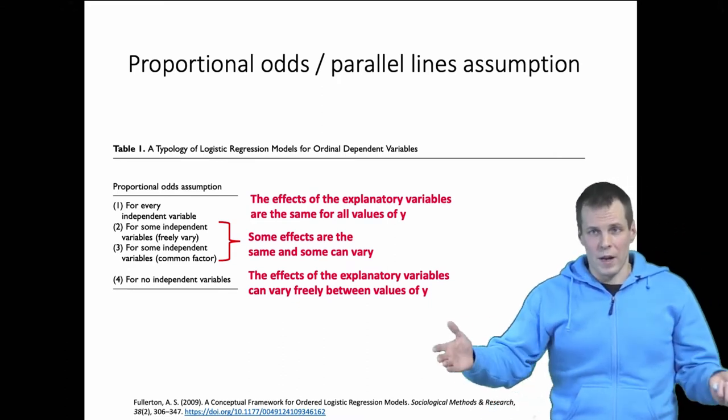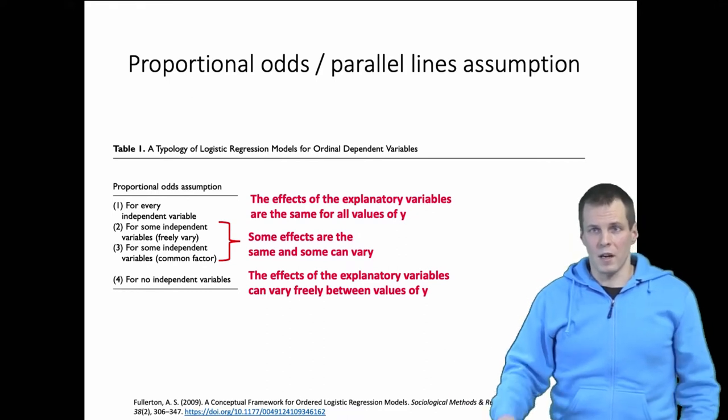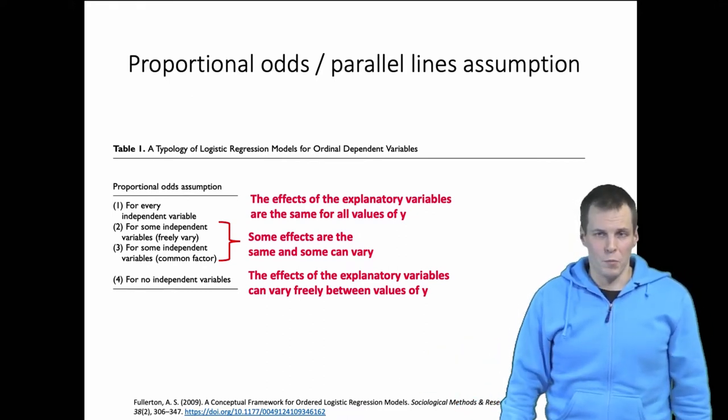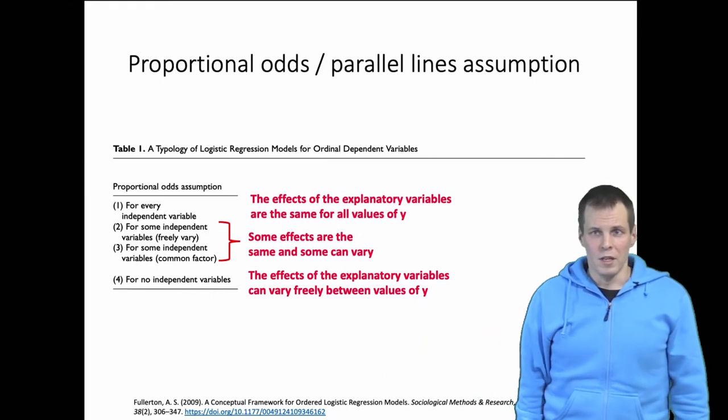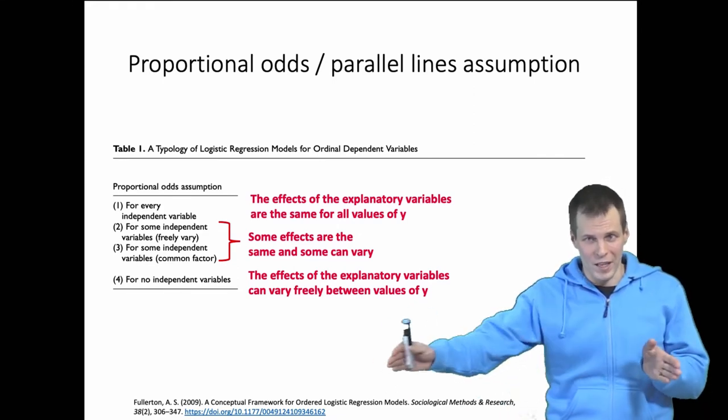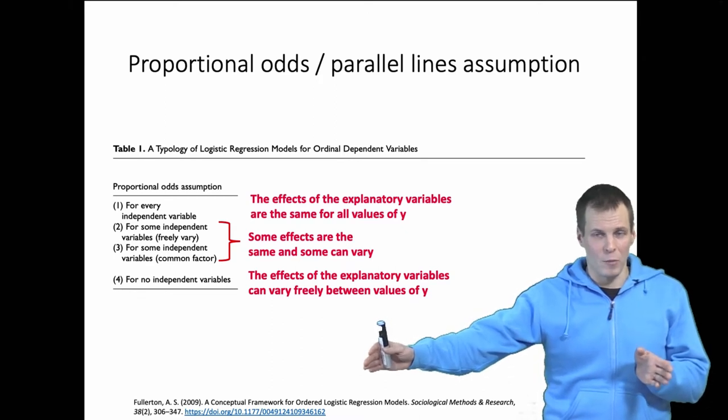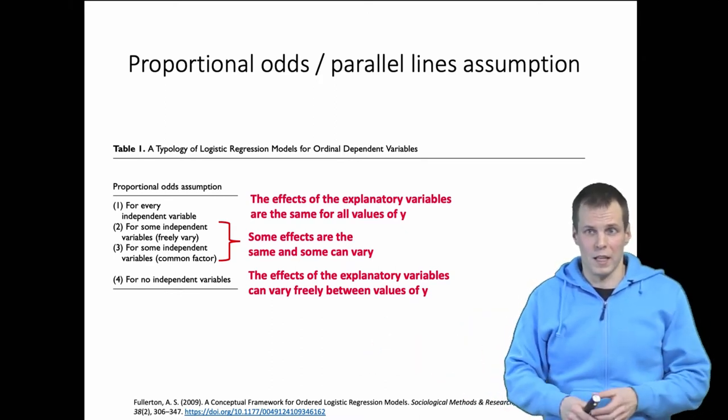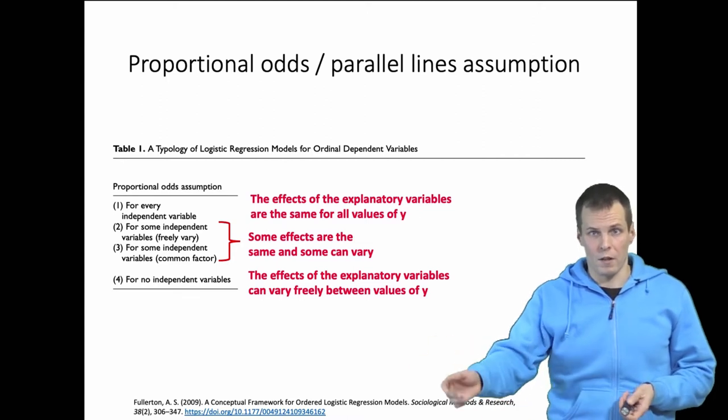Your stamina predicts how well you do, but then also being able to run really fast the last 100 meters predicts whether you're going to be first or second, but it doesn't really predict much whether you're the 10th or 11th.